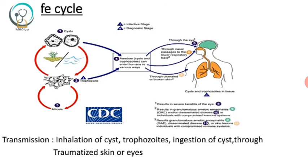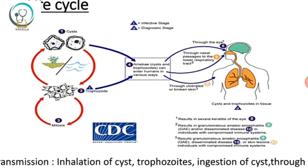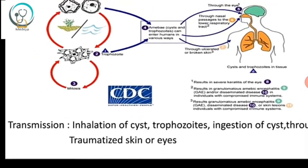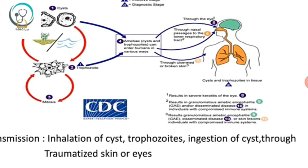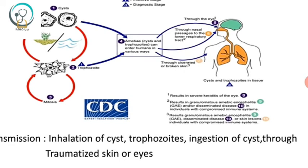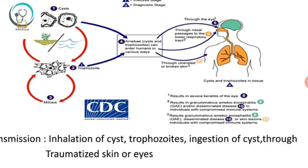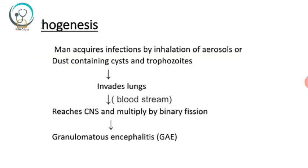Regarding the life cycle, both cysts and trophozoites are infectious and can enter the human body through various routes: through the eyes, through the nasal passage, or through ulcerated or broken skin. Transmission is by inhalation of cysts and trophozoites, by ingestion of cysts, or through traumatized skin or eyes. Once it enters, it can cause several infections such as keratitis of the eyes and GAE.